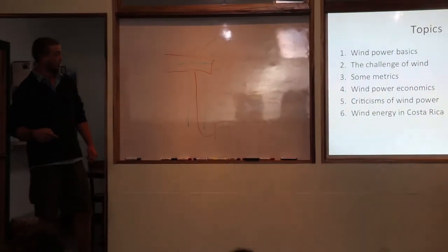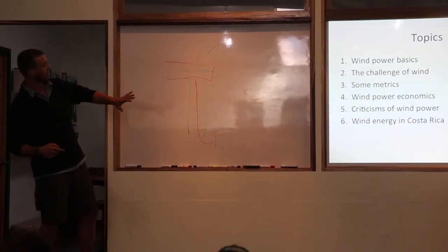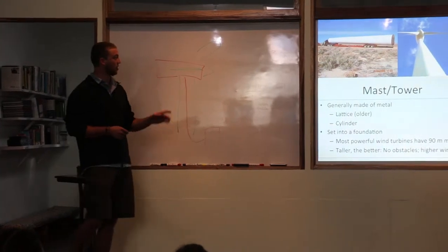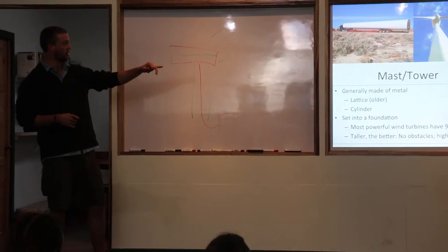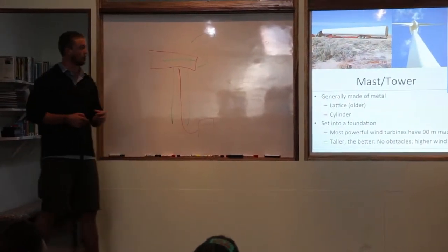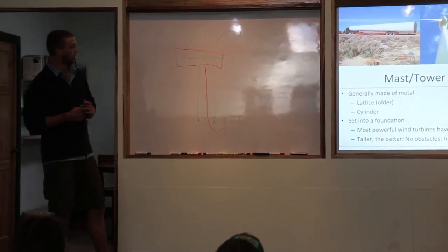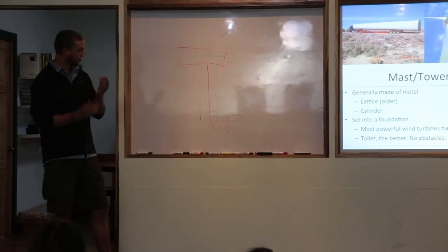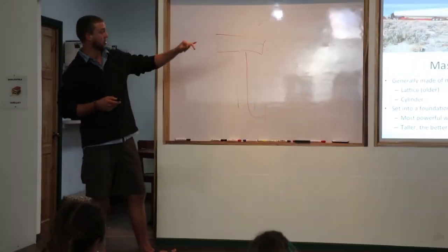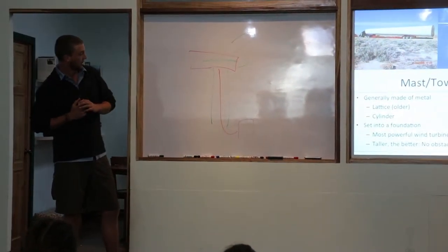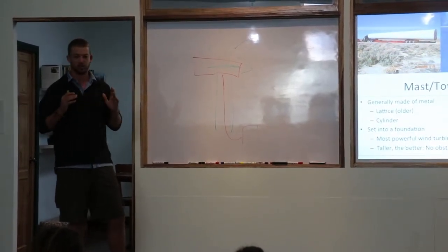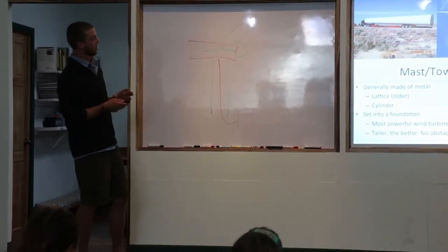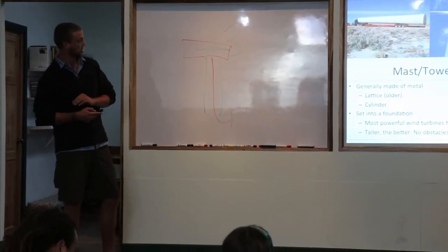We're going to learn a little more in-depth. So the mast and tower - in the older models, which we will see on the field trip, you have this lattice structure, which is metal and makes it go really tall. Newer models are made of metal that they're completely enclosed, just a better design. They're set into a foundation and they're going to be super tall. Generally, the higher you set your tower, the stronger the wind. So the higher you can get your turbine, the more potential energy.